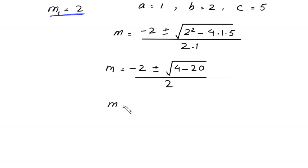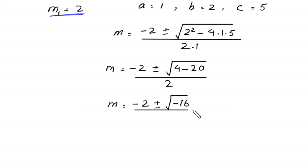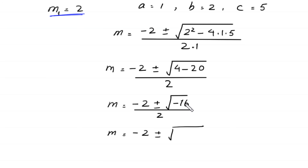Next, m is equal to negative 2 plus or minus square root of negative 16, divided by 2. We can write negative 16 as 16 times negative 1, divided by 2. Next, m is equal to negative 2 plus or minus — square root of negative 1 is equal to i — so we replace square root of negative 1 with i. We get negative 2 plus or minus 4i, divided by 2.